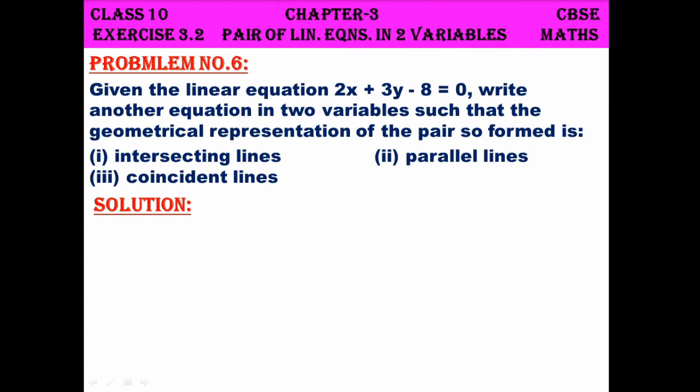Class 10 CBSE maths exercise 3.2 problem number 6. Given the linear equation 2x plus 3y minus 8 equals 0, write another equation in two variables such that the geometrical representation of the pair so formed is intersecting lines, parallel lines, and coincident lines.